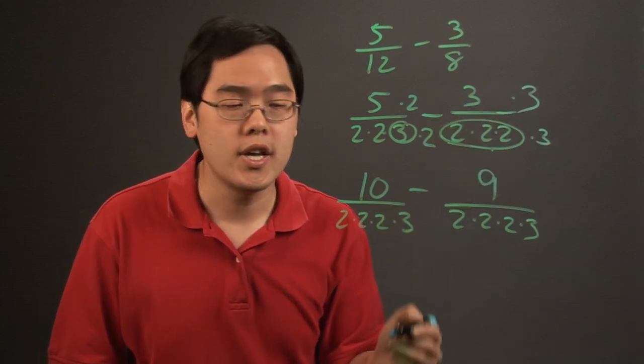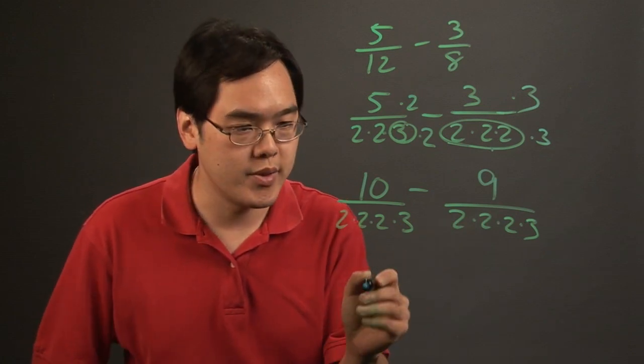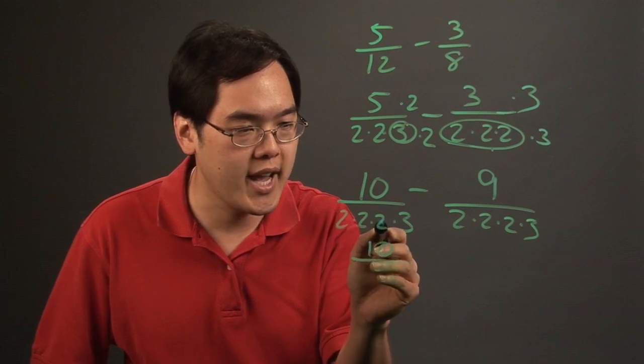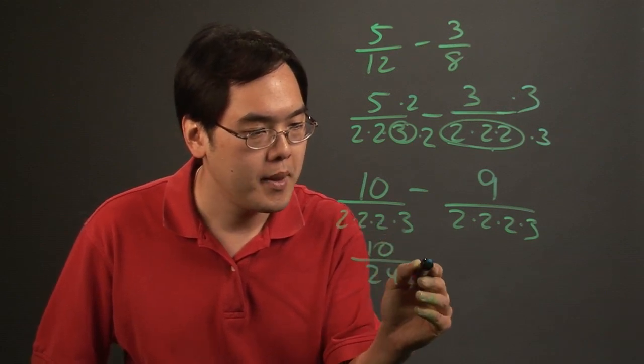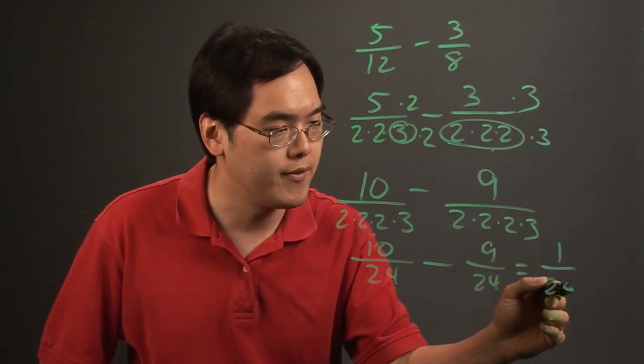At this point, you can multiply the factors to make them look more normal. In this case, you have ten over two times two times two, that's going to be eight times three is 24, minus nine over 24 as well, so you're left with one over 24.